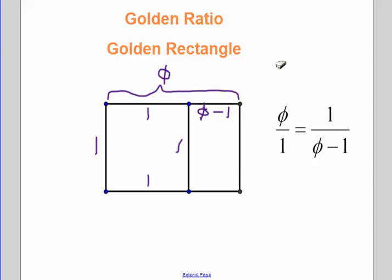Here's our proportion. The ratio of the long side of the original rectangle to the short side is equal to the ratio of the long side to the short side of the smaller rectangle. The smaller rectangle is similar to the larger rectangle.